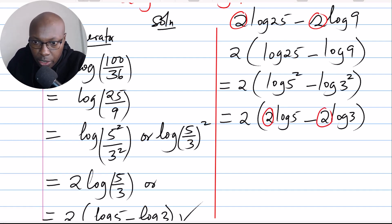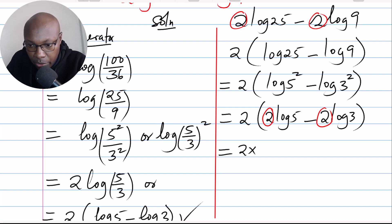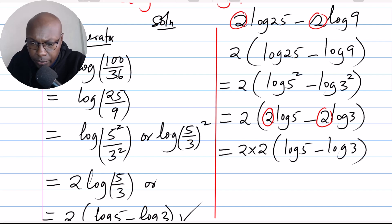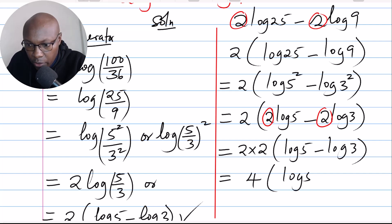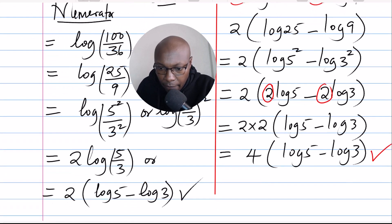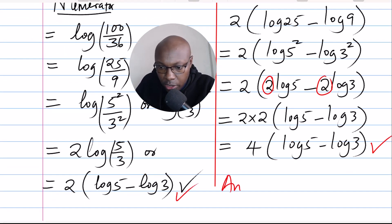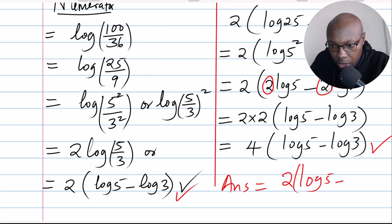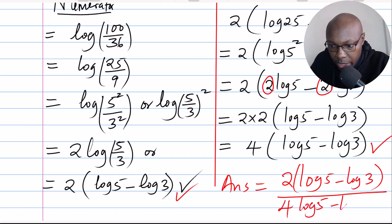From there, notice that 2 is common again inside the bracket. Factor out that 2, and combined with the 2 already outside, you have 2 times 2, which gives 4. Inside the bracket you remain with log of 5 minus log of 3. So the denominator is 4 times log of 5 minus log of 3. The numerator is 2 times the bracket log of 5 minus log of 3.